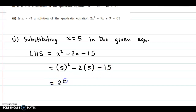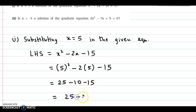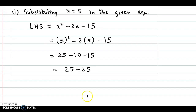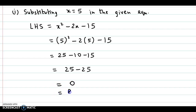This is 25 minus 10 minus 15, which is 25 minus 25, and that is equal to 0, which matches with the right-hand side.